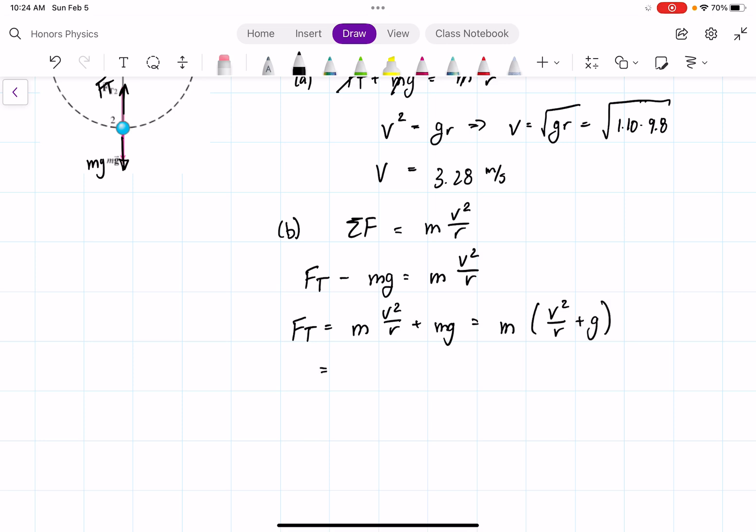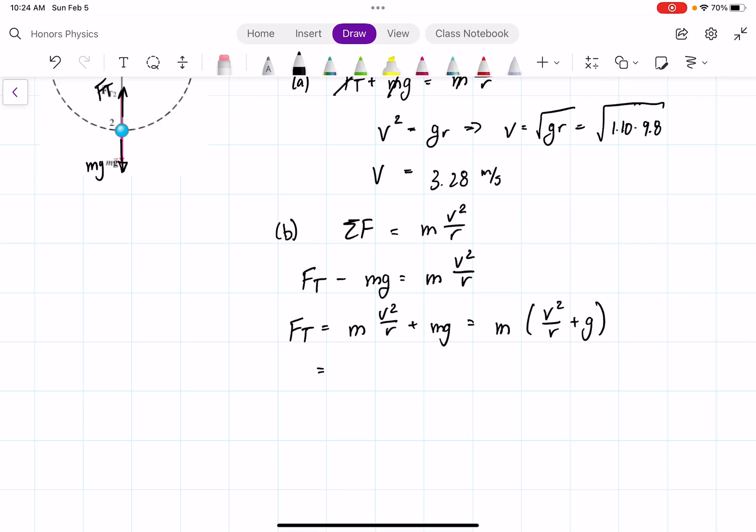And the mass we have as 0.15 times V, which is going to be 2 times 3.28, which is 6.56. That's going to be squared over the 1.1 plus 9.8.